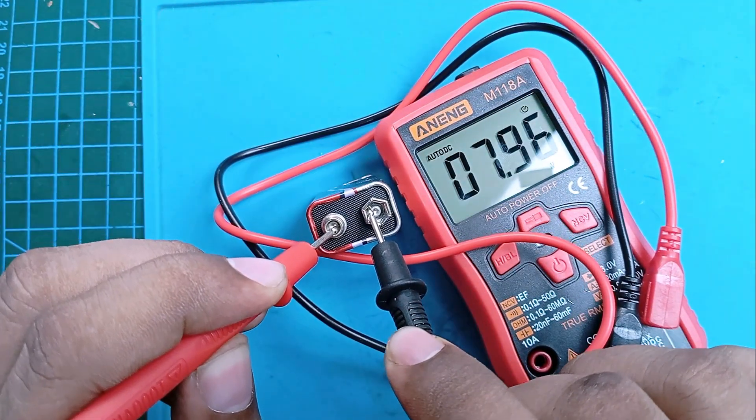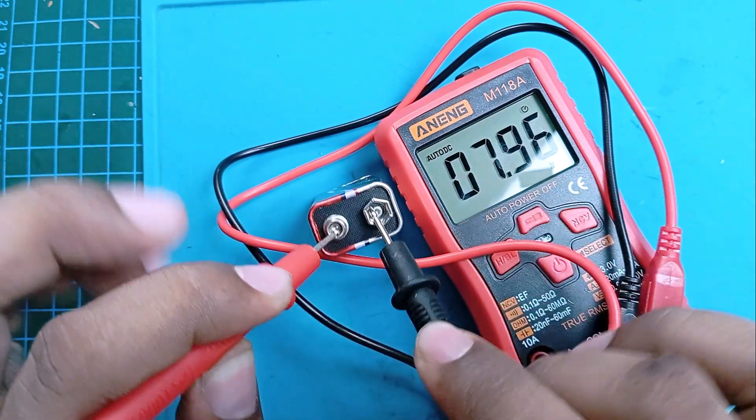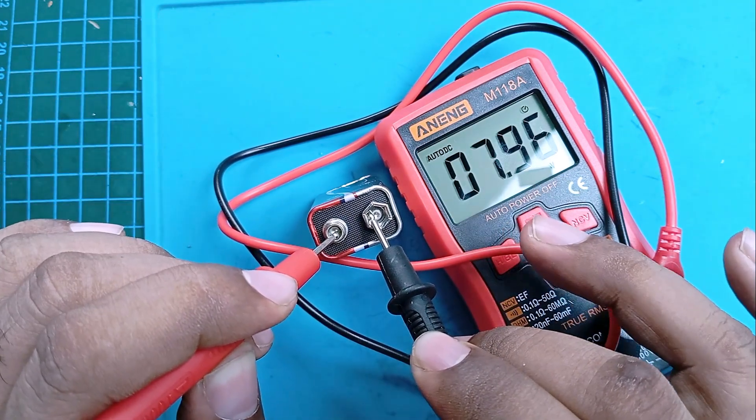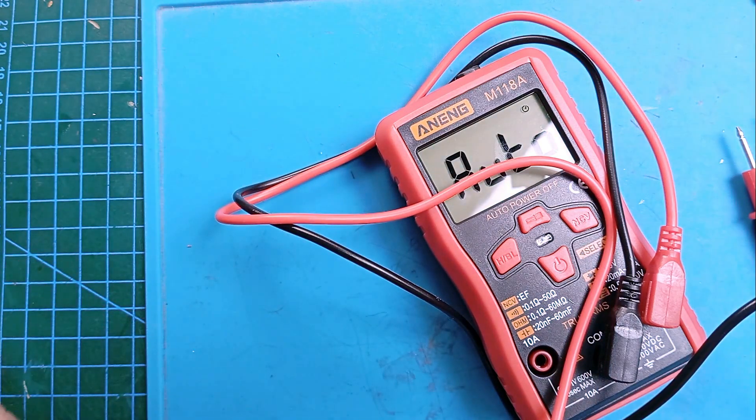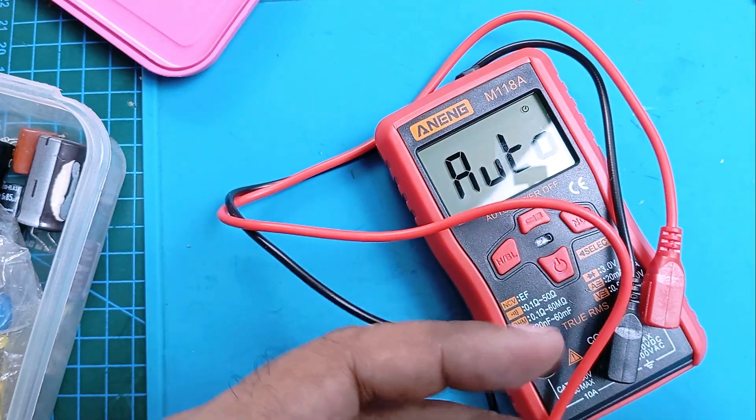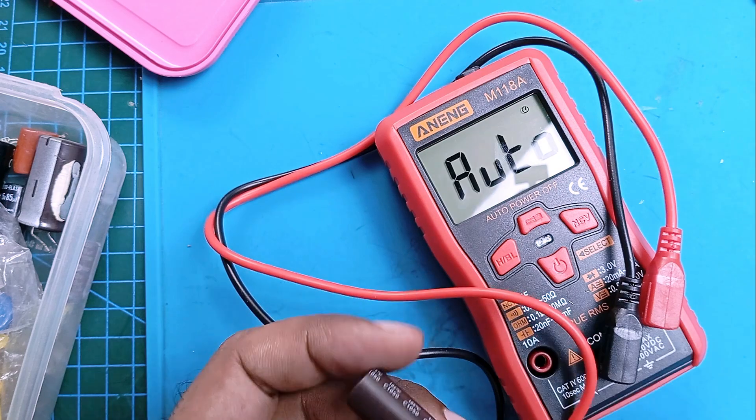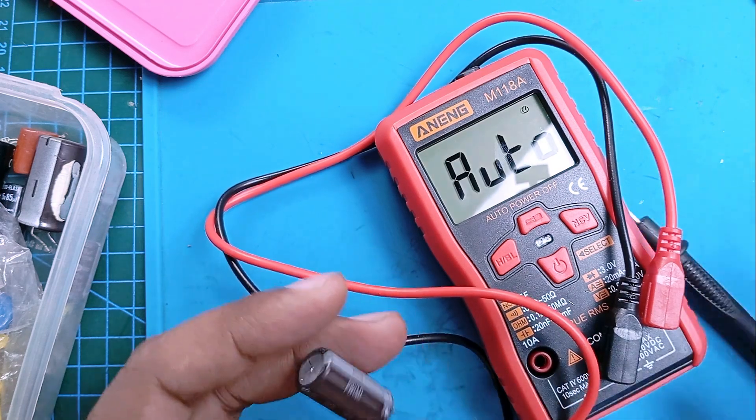After checking the AC, you see I'm checking the DC voltage and it can detect everything automatically - 7.96 volts DC. After that I will try to check - this is still in auto mode and you see what it says, it detects volts automatically.